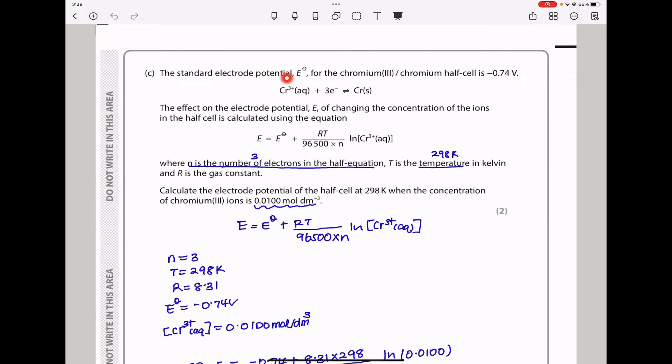Question C: the standard electrode potential for the chromium-3/chromium half cell is -0.74 volts. The effect of changing ion concentration in the half cell is calculated using this equation, where n is the number of electrons, t is temperature in Kelvin, and r is the gas constant. We can see there are three electrons here. The temperature is 298 because this was carried out at standard conditions.